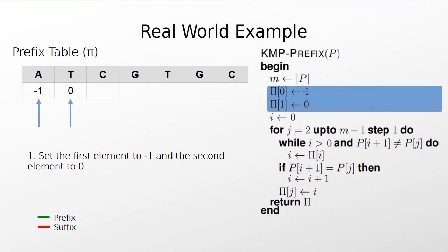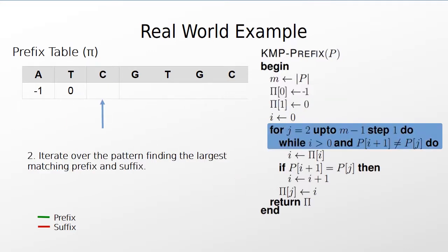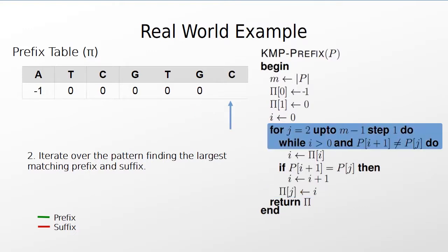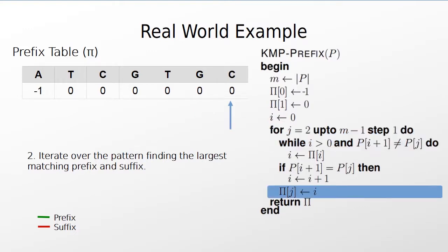Now let's look at a real-world application of this algorithm: DNA matching. We have specifically chosen an example which also demonstrates where the algorithm doesn't perform well — when there aren't many repetitions and the alphabet isn't as small as just 'a' and 'b'. Again, let's construct the prefix table first. We set the first and second elements to minus 1 and 0 respectively. We now iterate over the pattern and compare it to itself to find a prefix and suffix combination. None of the characters in the pattern match the first character, hence we set the value in the prefix table to 0 at every index after 1.